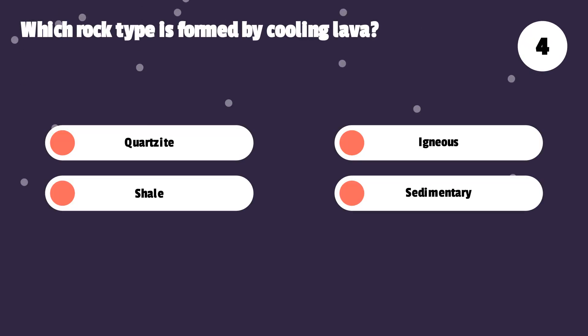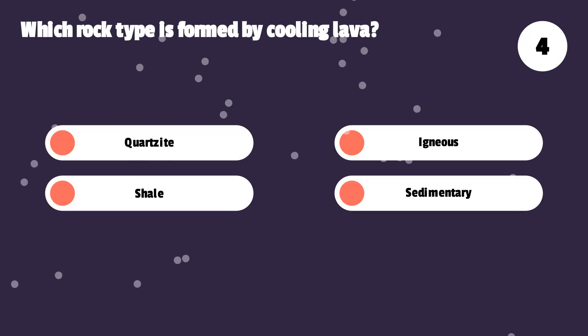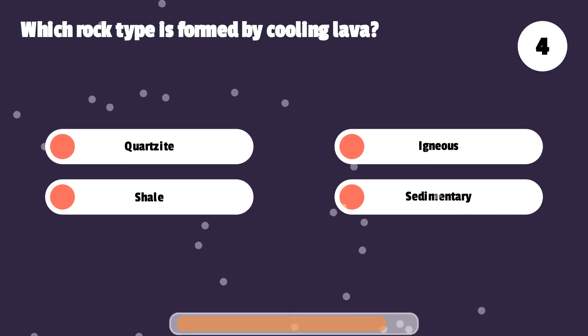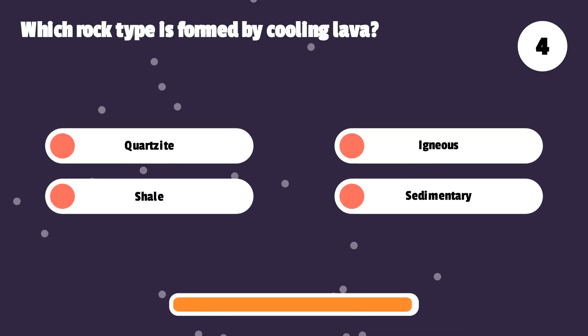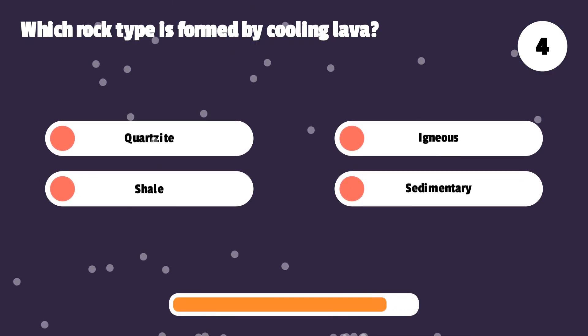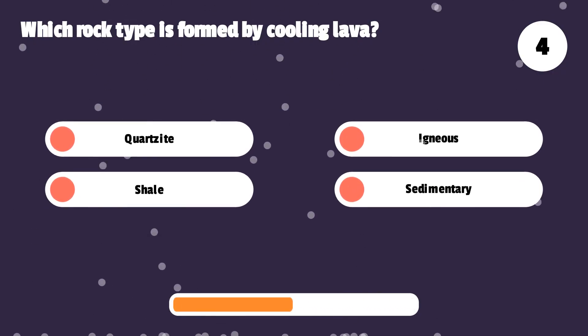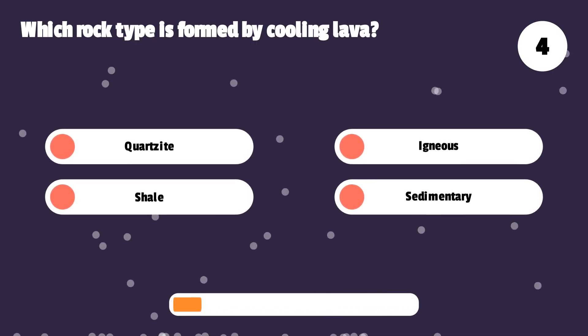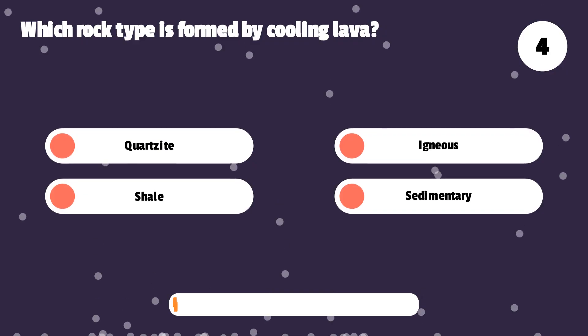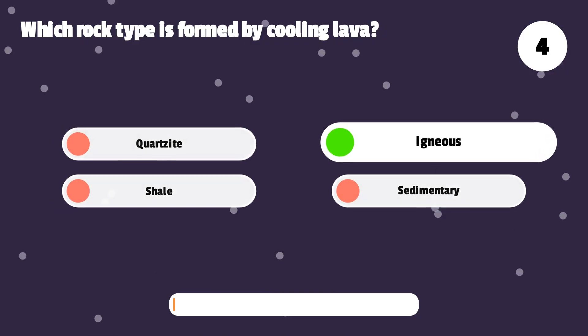Which rock type is formed by cooling lava? Quartzite, igneous, shale, or sedimentary? Igneous.